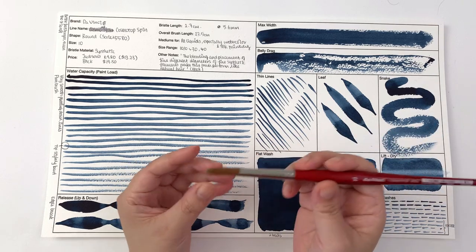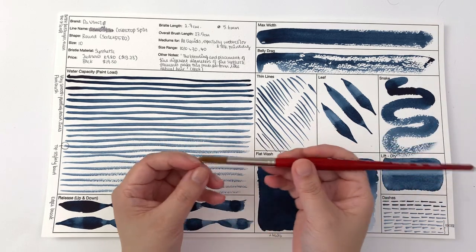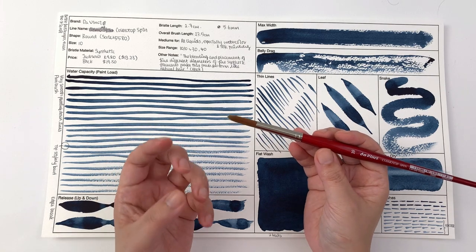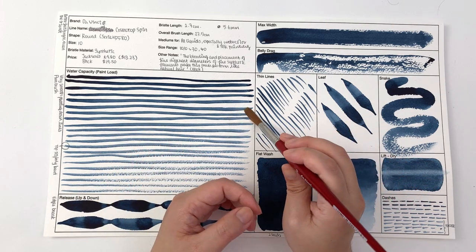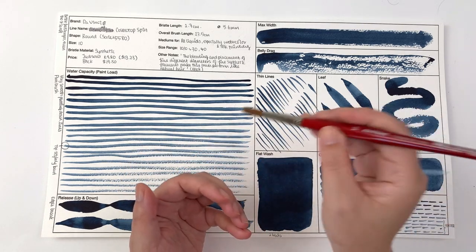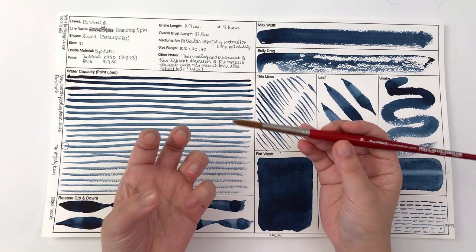It is a firm brush and you can definitely feel that when you wet the brush and you start painting with it. I can see why they say it's good for silk painting because for silk painting you do want that little bit of bounce and firmness in the brush to get the paint into the fibers.